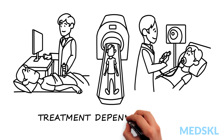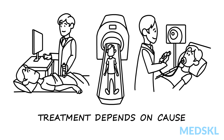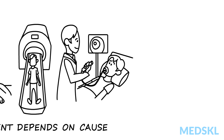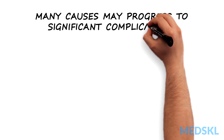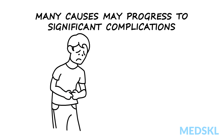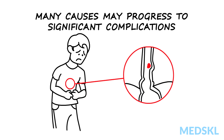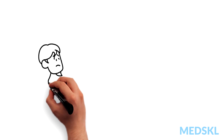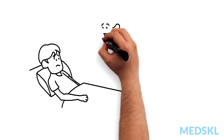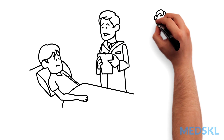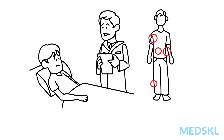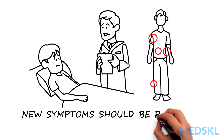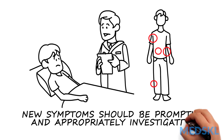Treatment of chronic abdominal pain depends on the cause, and therapy should be specific to the diagnosis. It is important to be aware that many causes of chronic abdominal pain may progress to significant complications. For example, malignancy may occur with reflux from Barrett's esophagus. The clinician should also realize that patients with long-standing abdominal discomfort can develop new pathology independent of the underlying cause for chronic pain. New symptoms that arise in the background of chronic pain should be promptly and appropriately investigated.